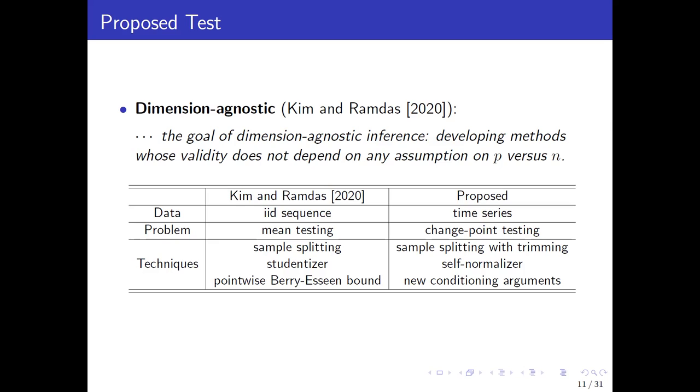Additionally, there are some very significant differences in the techniques used in these two papers. Apart from the sample splitting used in Kim's paper, we still need to adopt the technique of trimming. This is to alleviate the temporal dependence. As for the test statistic, Kim and Ramdas used a classical student t-statistic, but we use a self-normalizer. Once establishing theory, the key tools used in their paper is the pointwise Berry-Esseen bound conditionally on the projected data, but we need to carry out some new conditional arguments.